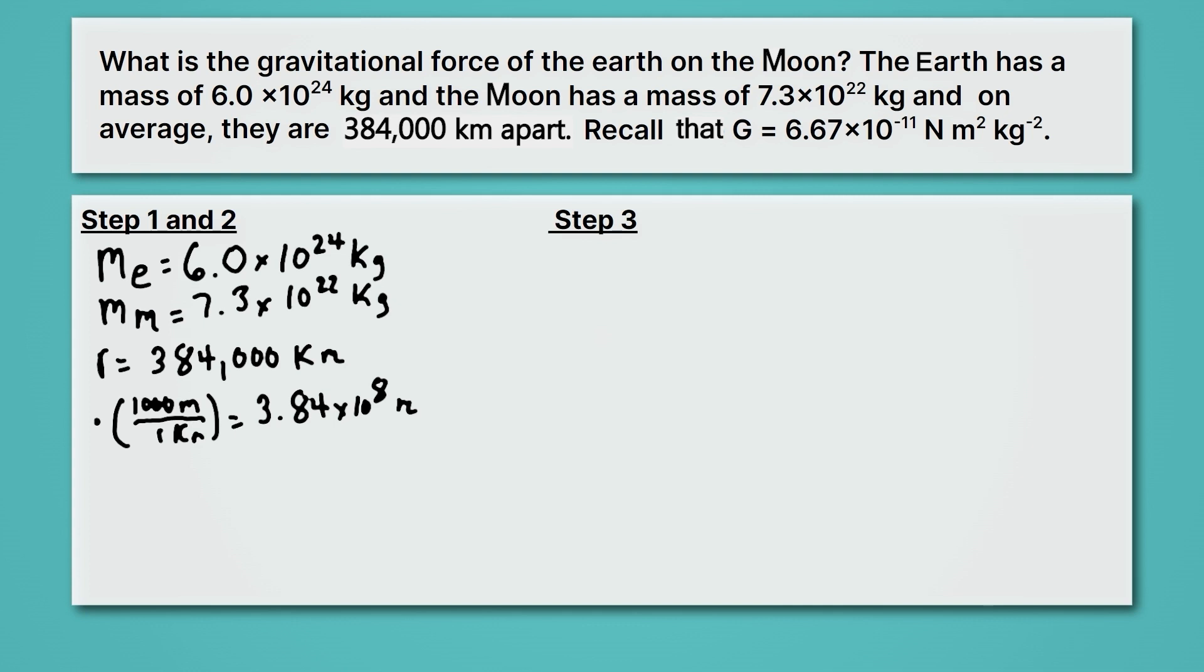Next up, we want to write down the equation for our gravitational force. So we'll give ourselves a little space here. And then we'll recall that our equation for force is F equals big G, M1, M2, all over R squared. So we got R squared there on the bottom. Now, let's plug in the numbers we know.